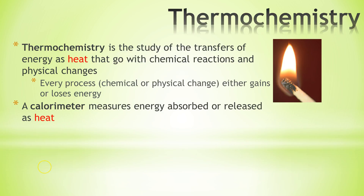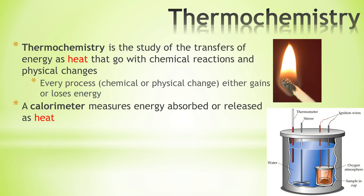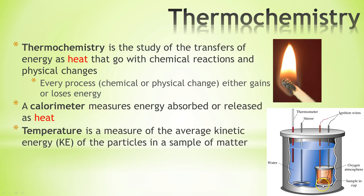In chemistry we use something called a calorimeter to measure energy absorbed or released as heat. Essentially you have a whole bunch of water that's going to be stirred. You have a thermometer and you're going to measure the temperature before and after. You actually explode your little sample in there — pure oxygen environments can burn very rapidly — and then you measure how much that water temperature changed. From that we can figure out the energy content.